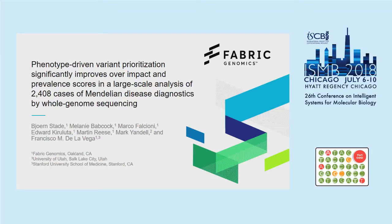Today I will be talking about some experience on how to select genes and variants that are disease-causing in Mendelian disease patients, and some of the methods that we use as part of the Genomics England 100,000 Genomes Initiative for the first 2,000 cases or so.